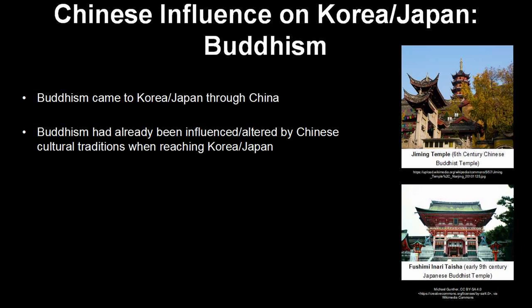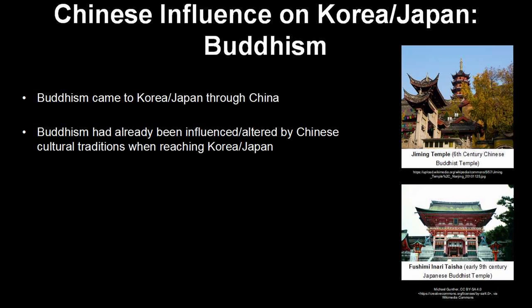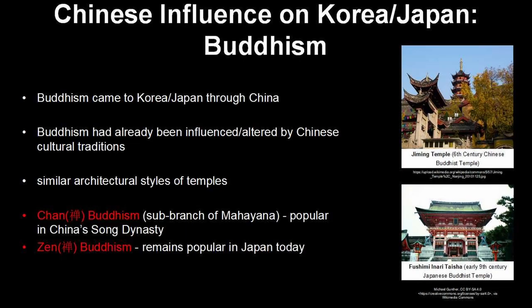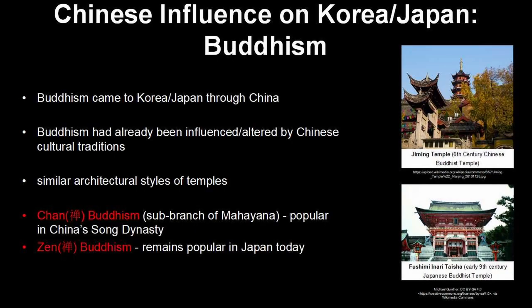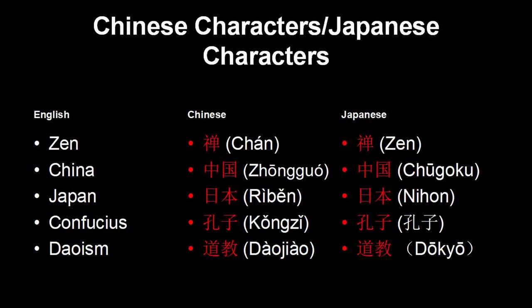Buddhism remains popular in both Japan and Korea today, and was even more popular during our time period of 1200 to 1450. Buddhism came to China through the Silk Roads, and it got to Korea and Japan through China. By the time it got to them, the versions they received were largely influenced by Chinese cultural traditions — even the architecture of the temples is similar. The most popular Buddhist sect during the Song dynasty was called Chan Buddhism, a sub-branch of Mahayana. The most famous sect in Japan today is called Zen Buddhism — and Zen is Chan, and Chan is Zen. The Japanese literally copied the Chinese characters and then adopted them for their own language.